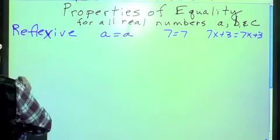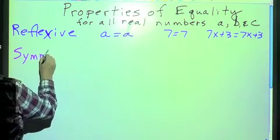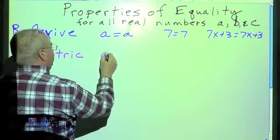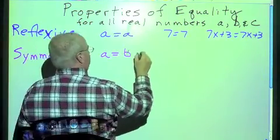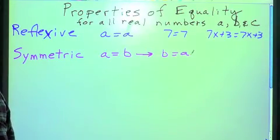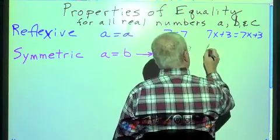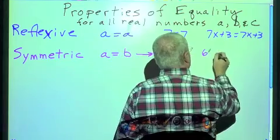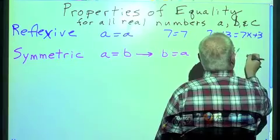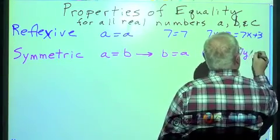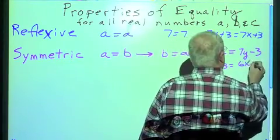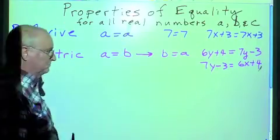The next property is symmetric. Symmetric property, pretty simple too. It simply says if A equals B, then B equals A. We can trade that around. Let's take that into a little expression or equation. If 6y plus 4 equals 7y minus 3, then 7y minus 3 equals 6x plus 4.